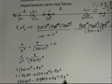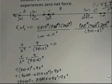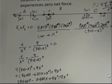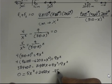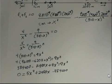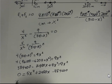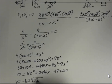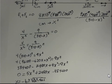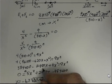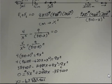Subtracting terms from both sides, we end up with 0 equals 5X squared plus 2,480X minus 384,400. This is a quadratic equation, so we solve it with the quadratic formula: X equals negative B plus or minus the square root of B squared minus 4AC, all divided by 2A. Here A equals 5, B equals 2,480, and C equals negative 384,400.